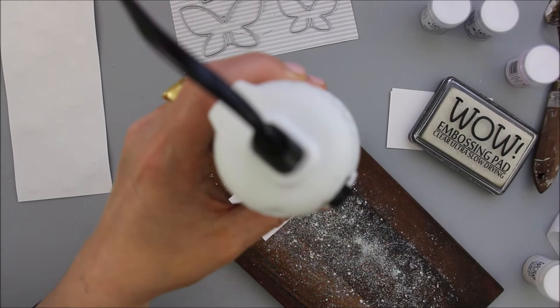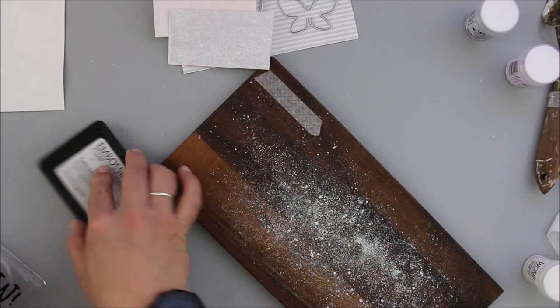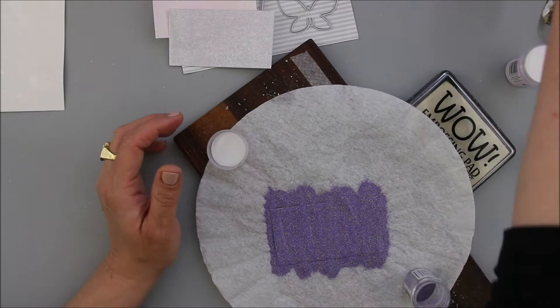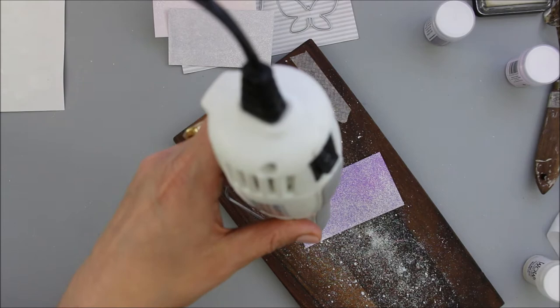I have been repeating the same steps two times more for the other colors. The other colors I'm using are Sugared Almond, which is the darkest tone in my ombre, and Periwinkle, which is the mid-tone and one of the newest colors in the WOW embossing color range.